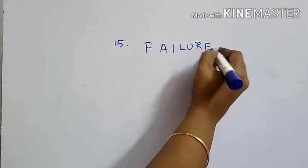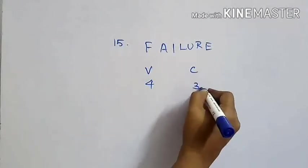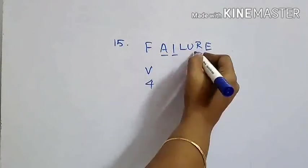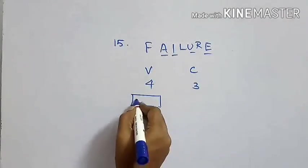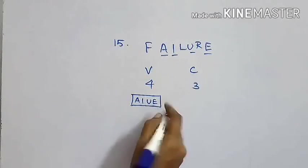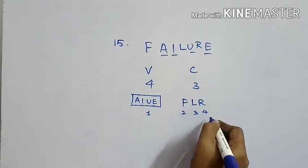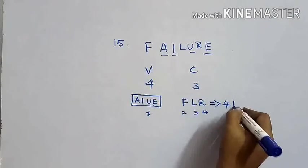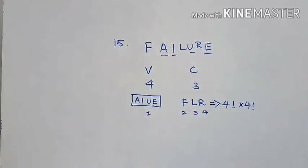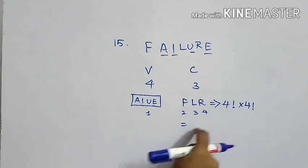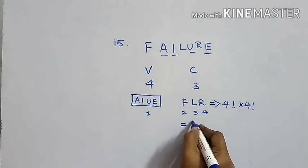15th question: The number of arrangements of the letters in the word FAILURE such that the vowels always come together. The vowels are A, I, U, E — that is 4 vowels. The consonants are F, L, R. Treating all vowels as a single group, we can arrange the 4 units (vowel group + F, L, R) in 4! ways, and the vowels within themselves in 4! ways. So the answer is 4! × 4! = 576. Option A is the answer.